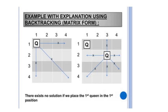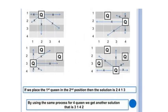So we try placing Queen 1 in the second column. For Queen 2, we can't place it in the first column — Queen 1 attacks it diagonally. We can't place it in the third column either, as Queen 1 attacks there too. So we move Queen 2 to the fourth column, where Queen 1 cannot attack Queen 2.